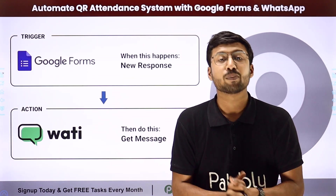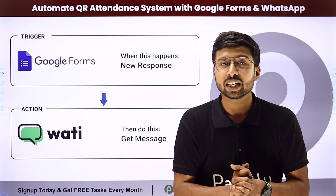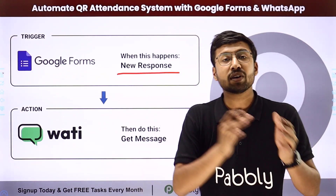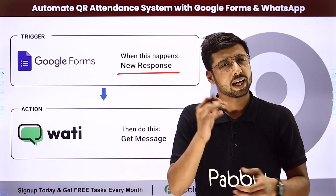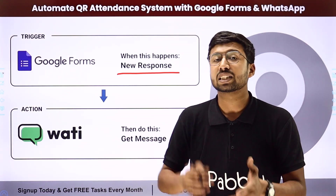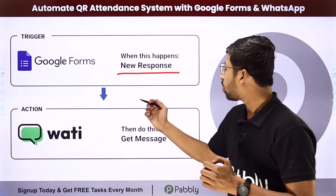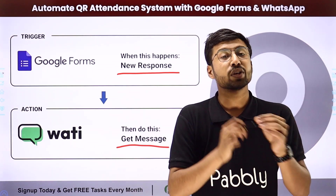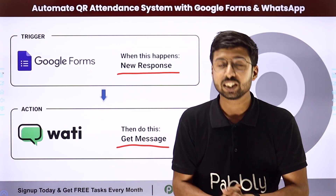In this automation, with the help of Pabbly Connect, every time we receive an attendance submission in Google Forms, we are going to check whether the attendance is within the correct time limit or not. And if any team member is late to mark the attendance, we are going to instantly get a WhatsApp notification that this particular team member has marked their attendance late today.